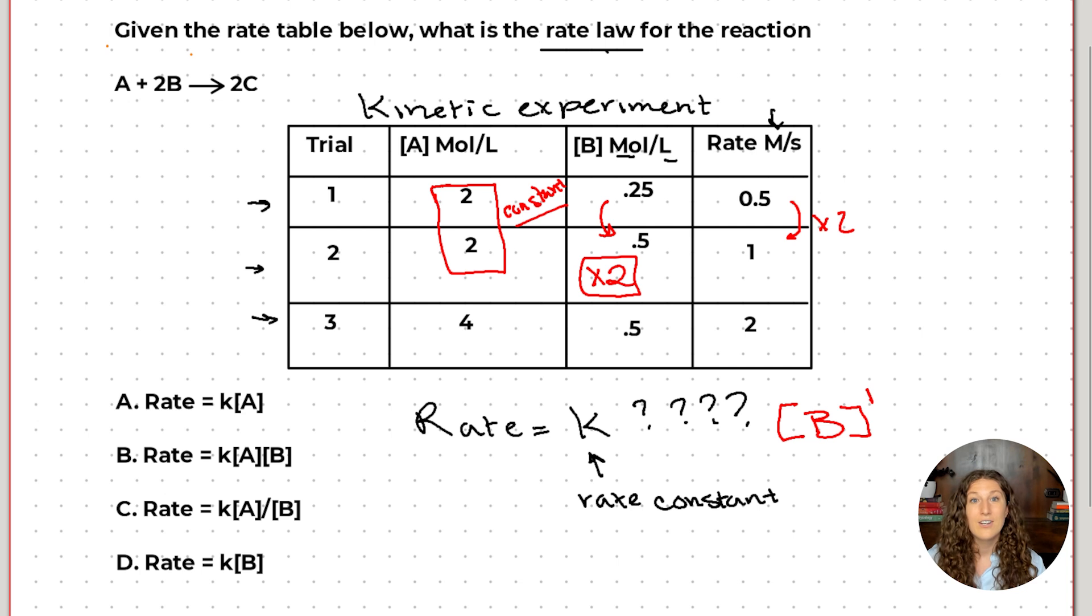Now let's go ahead and see if A also has an impact. We'll go ahead and we need to hold now B constant, right, to compare the A's. So between trials 2 and 3, we held B constant. So now what happened between trial 2 and 3 for the concentration of A? Yep, we doubled it, right? And what happened to the rate when we doubled A? It also doubled. So A also has a linear relationship that impacts the rate. It's changing the rate when we change the concentration. So it too needs to be included in the rate law.